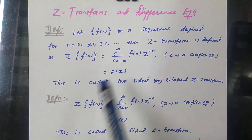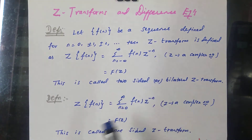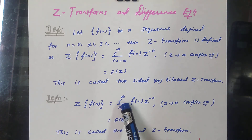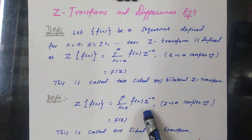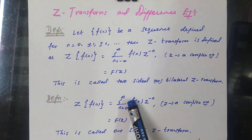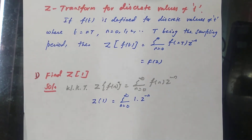If the limit is 0 to infinity, then it is called the one-sided Z transform. That is the next definition: Z of f of n equal to sigma from n equal to 0 to infinity of f of n times z to the power minus n, which equals a function of Z. In the whole unit we are going to use only the one-sided Z transform, that is sigma from n equal to 0 to infinity only.